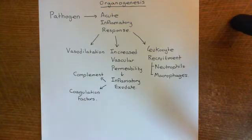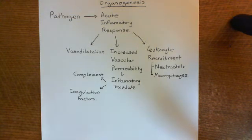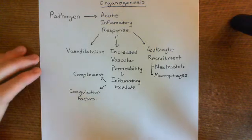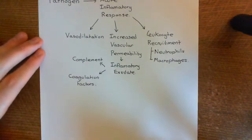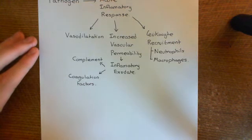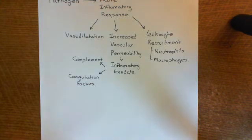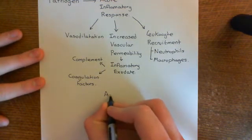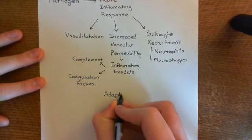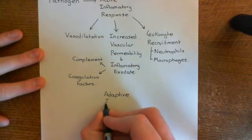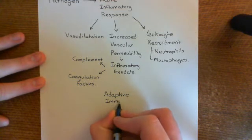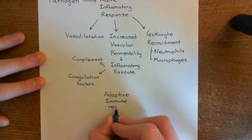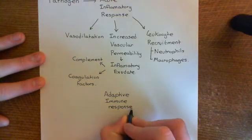If the innate immune system fails to clear the pathogenic infection, then over a longer period of time you'll initiate the adaptive immune response. In the adaptive immune response, you recruit lymphocytes. There are two main branches of the adaptive immune response.